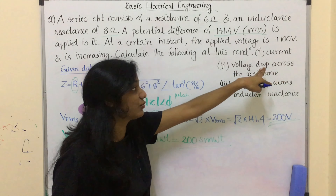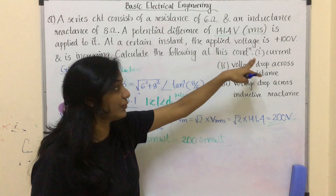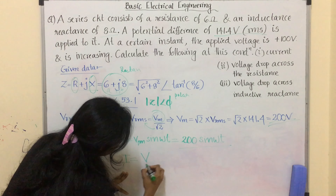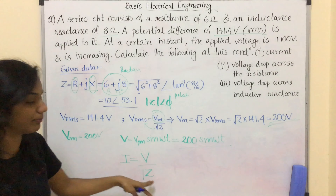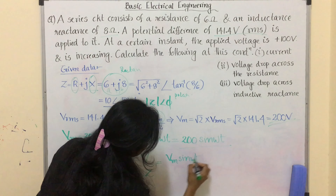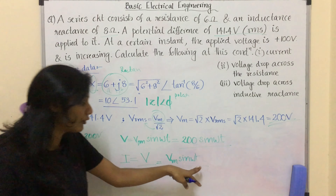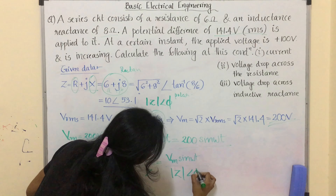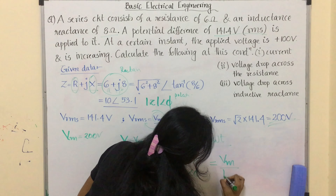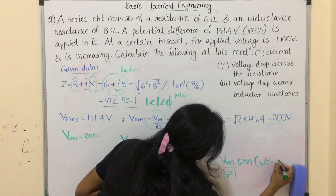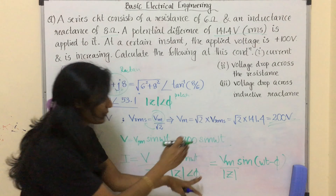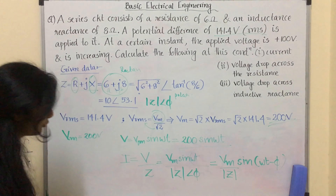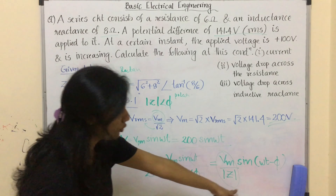We need to calculate current, voltage drop across resistance, and reactance. The general form for current I = V / Z. In sinusoidal form, I = (Vm / |Z|) · sin(ωt - φ), where the polar form of impedance is |Z|∠φ. This is the general form of the current equation, and we already know the values for Vm, |Z|, and φ.